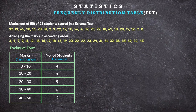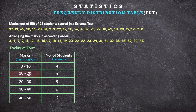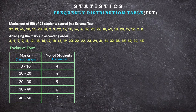This is the part that we can see in the exclusive frequency distribution table — these are the class intervals. These are 0 up to 10 marks. In the class intervals, it is based on marks because it is our science test.